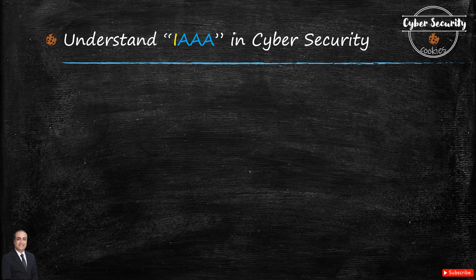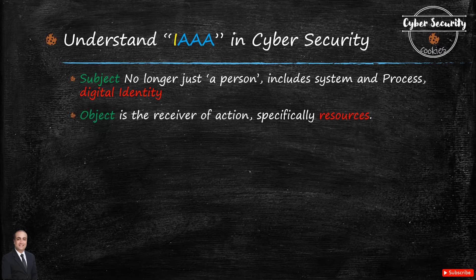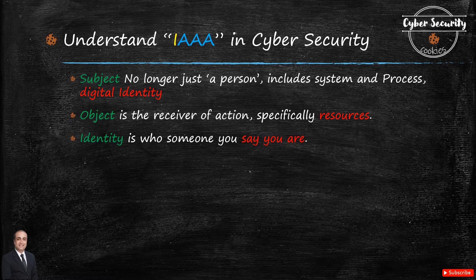Before we jump into the concept, we have to understand what a subject and an object are. A subject is not necessarily a person — it can be a process or a system. An object is the receiver of an action, which generally is a resource. To give you an example: you are a subject and your house is an object, so your action would be entering your house.